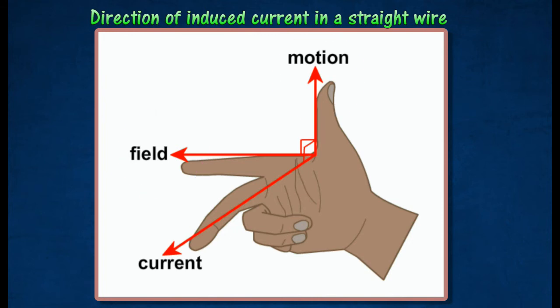The thumb and the first two fingers on the right hand are held at right angles to each other, with the first finger pointing in the direction of the field, and the thumb in the direction of motion, then the second finger points in the direction of the induced current.